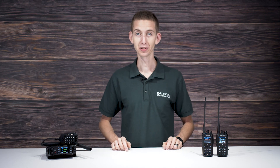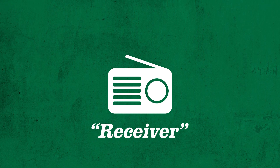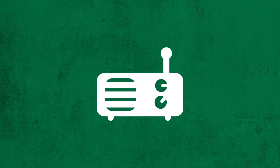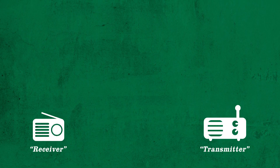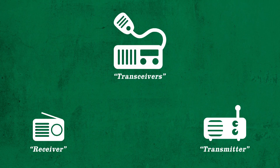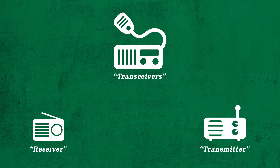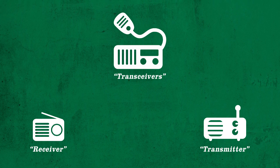Now let's talk about what kind of equipment you might need to start using analog radio. A receiver is a device that allows you to listen to set frequencies but not transmit over them. Likewise, there are transmitters that allow you to transmit data but not receive it. Conventionally, there are also transceivers, which allow you to both transmit and receive your own data.